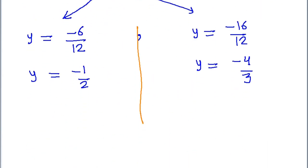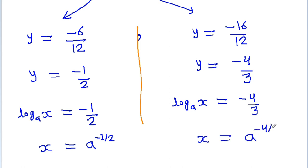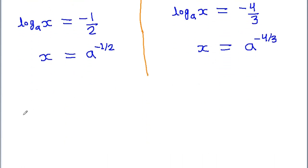Since y = log_a(x), we have log_a(x) = -1/2, giving x = a^(-1/2), and log_a(x) = -4/3, giving x = a^(-4/3). So there are two values of x: x = a^(-1/2) and x = a^(-4/3), valid when a > 0 and a ≠ 1.